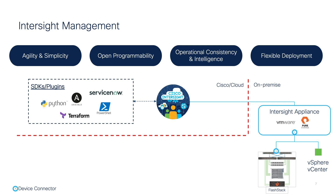Intersight is all API-driven and everything is completely programmable, providing flexibility in how you deploy and manage your infrastructure and operations. You could choose to automate the infrastructure using a low-code approach with Intersight Cloud Orchestrator, or by taking advantage of the Intersight Ansible module, PowerShell scripts, Terraform provider for Intersight, or Python SDK. The UCS Solutions Team's GitHub page contains repositories to automate the deployment and operations of FlashStack-based solutions.